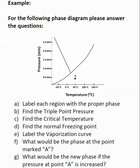Here is a typical exam-style question involving a phase diagram. You may be asked to label each region with its phase, find the critical point pressure and temperature, find the normal freezing point, label the vaporization curve, identify the phase at a given point A, and determine the new phase if the pressure at point A is increased.